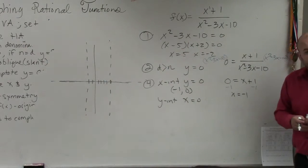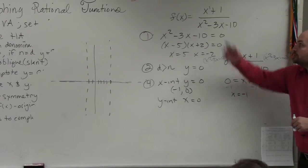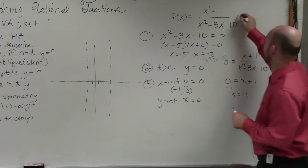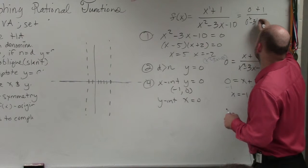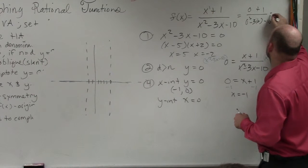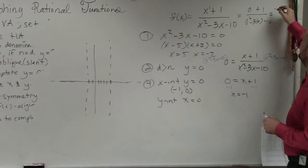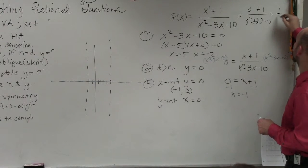So to find the y-intercept, please pay attention. To find the y-intercept, you just plug zero in for x. So you have 0 plus 1 over 0 squared minus 3 times 0 minus 10. Well, that's going to end up giving you 1 over negative 10.